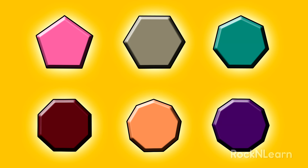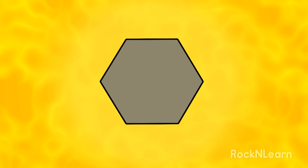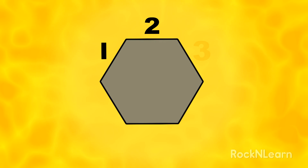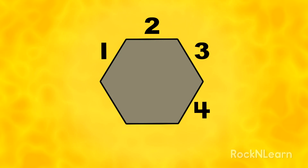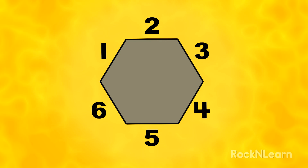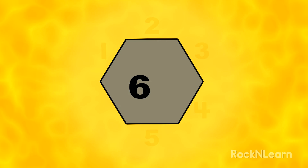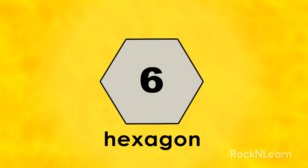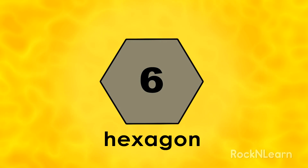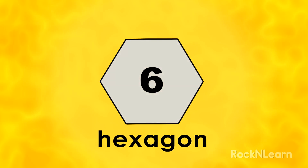Point to the gray shape. Let's count the sides. One, two, three, four, five, six! A shape with six sides is called a hexagon. Hexagon!